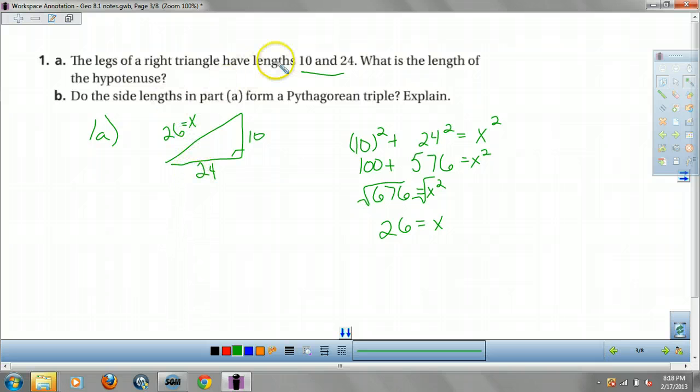Do these represent a Pythagorean triple? Why, yes, they do. Because isn't this just 2 times 12? And this is 2 times 5. And this one's 2 times 13. 5, 12, 13, family.